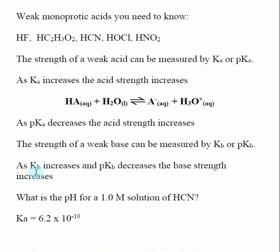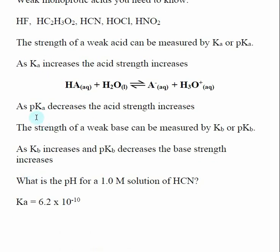So another way that we can discuss acid strength is with the pKa. And the pKa is just the negative log of the Ka. And this is commonly used to express relative acid strength in tables. But here the trend is the opposite. So as the pKa decreases, the acid strength is said to increase.